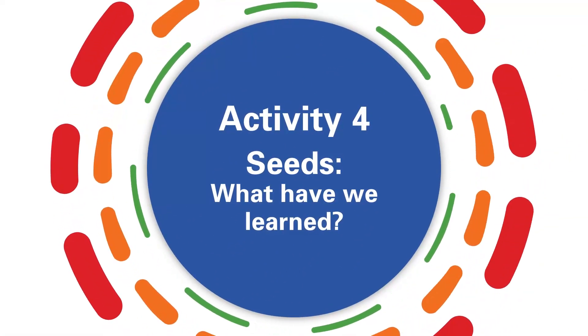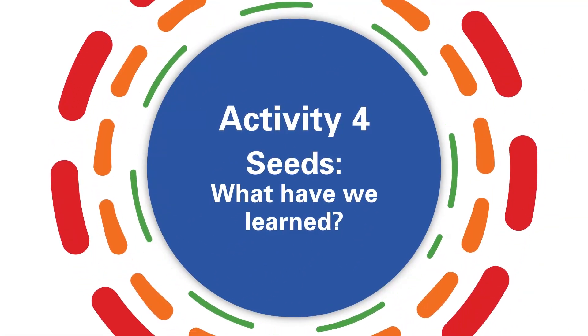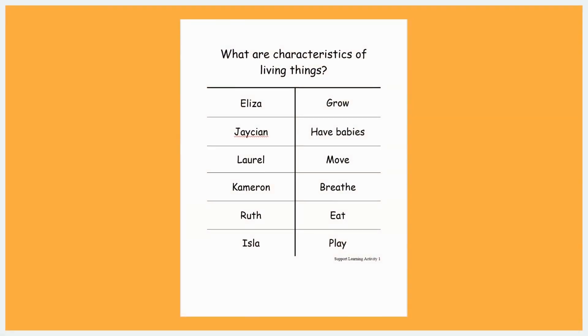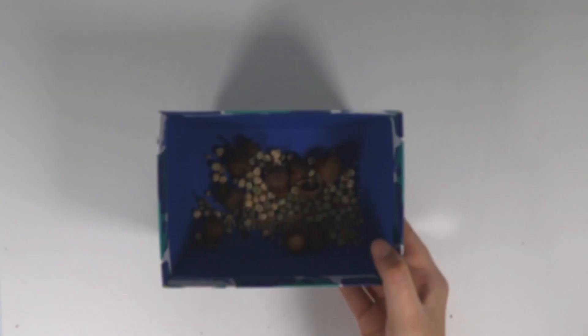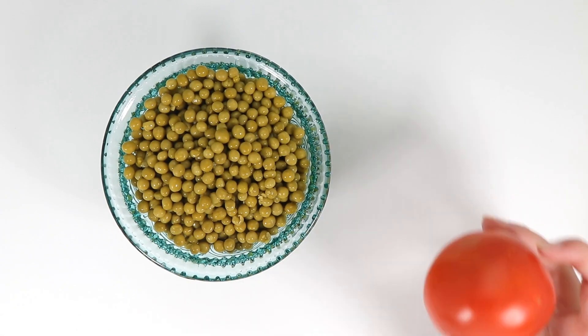Activity four focuses on edible seeds and will review what children learned about seeds. For this activity, you will need the following materials: the documentation panel titled Characteristics of Living Things from Unit 1, one large sheet of paper, and a small box for observing seeds.